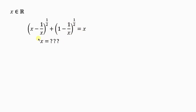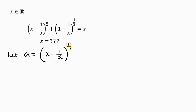We're to look for the value of x. Our first step is to let a be equal to the first expression, which is x minus 1 over x to the power of half. Now we need to remove this power of half, and we do that by taking the square of both sides. So a squared equals x minus 1 all over x.